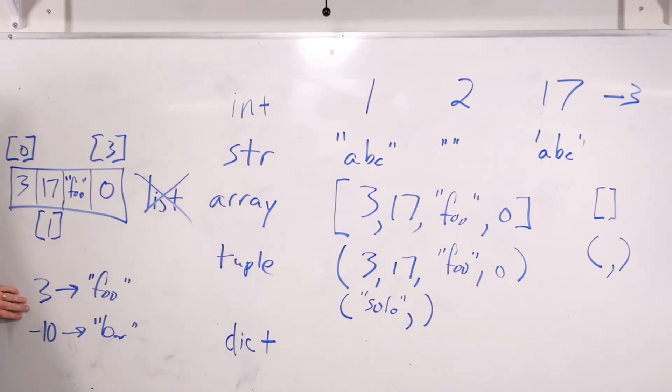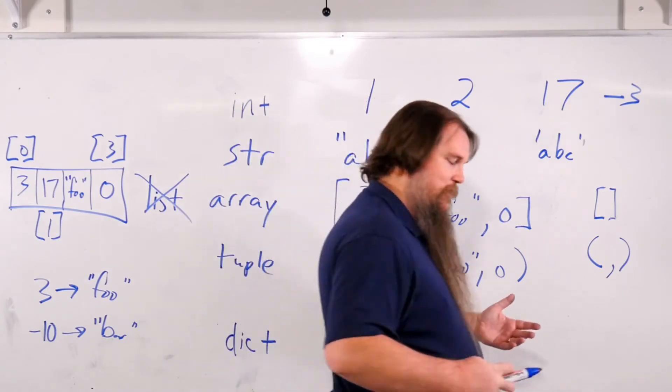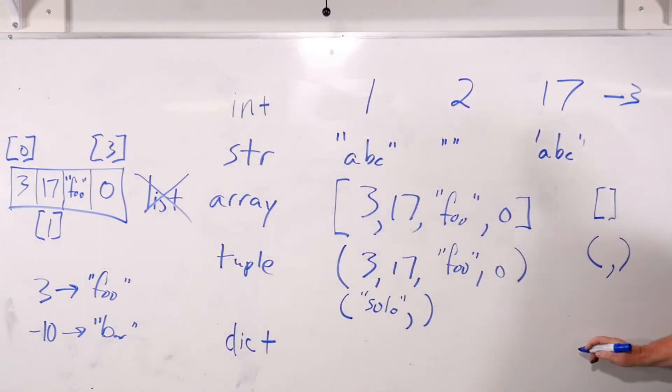All right. So if you've got a dictionary, how are you going to do this? Well, the first thing that you might do, a very common thing that you might do, is you might declare an empty array first. So you declare an empty array with empty curly braces.